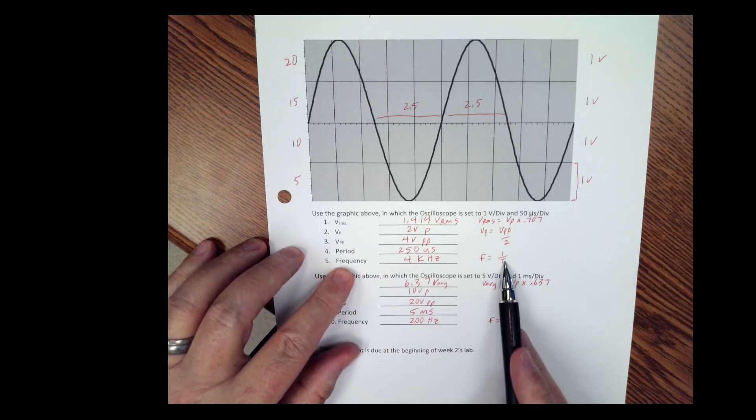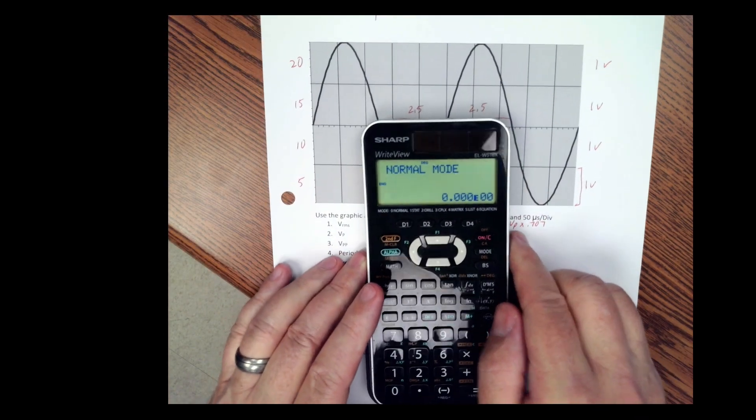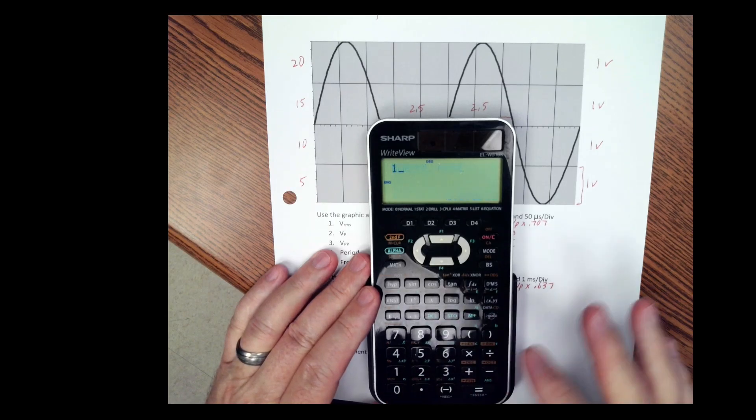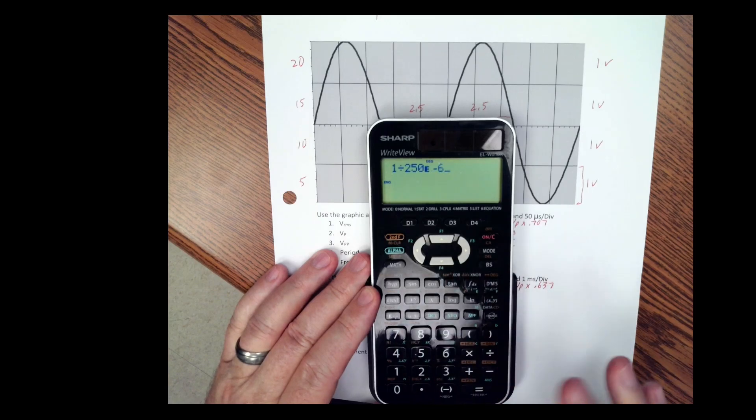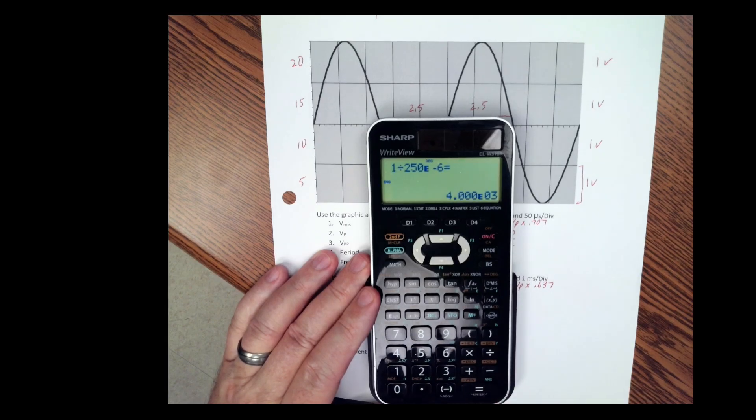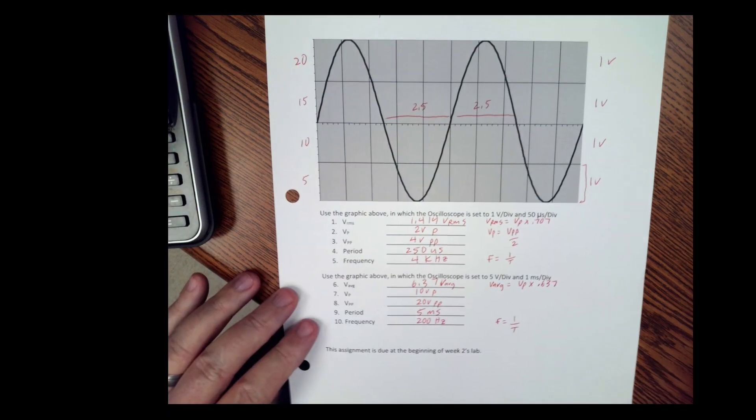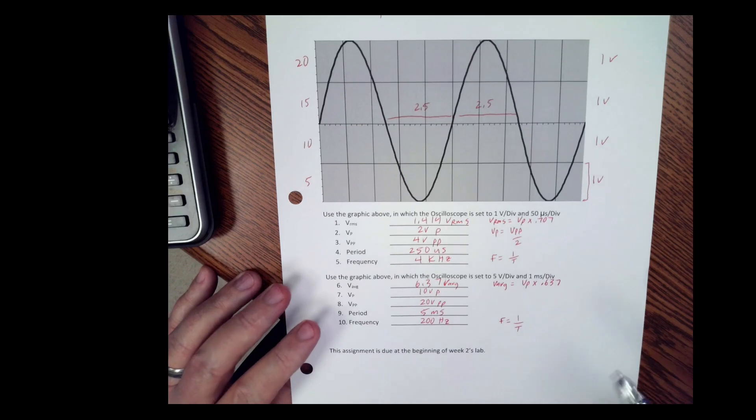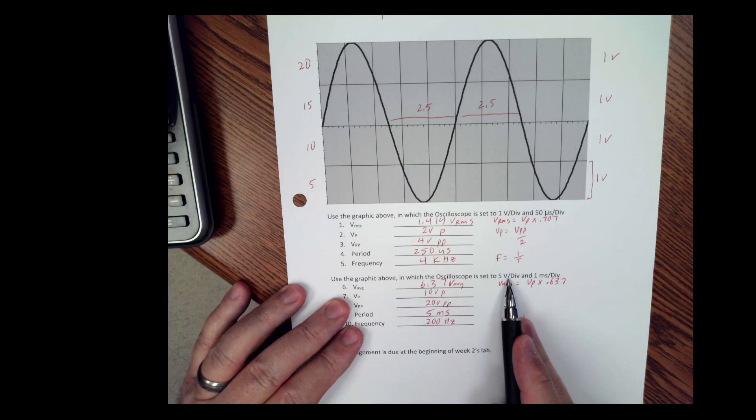And then the frequency is one over the period. So if you take one divided by 250 microseconds, which is 250 E to the negative six, you get four kilohertz. Okay, so that's the first part. The second part now says it's set to five volts per division.